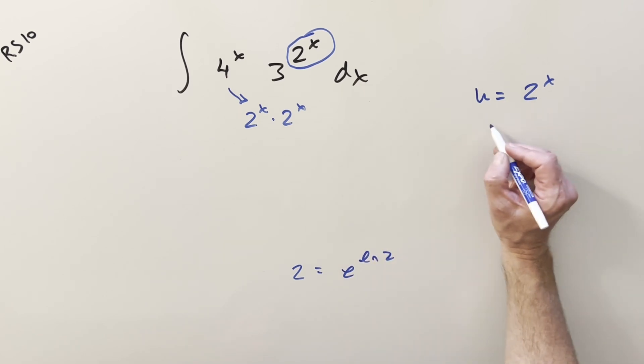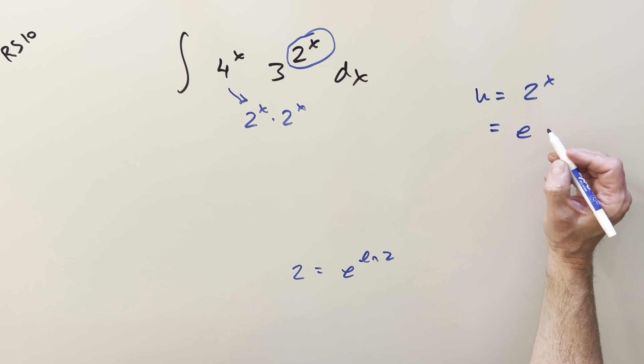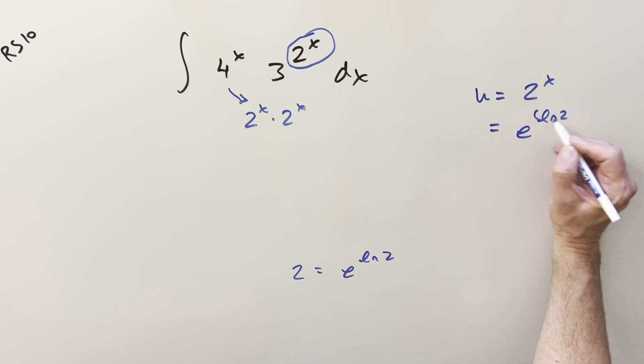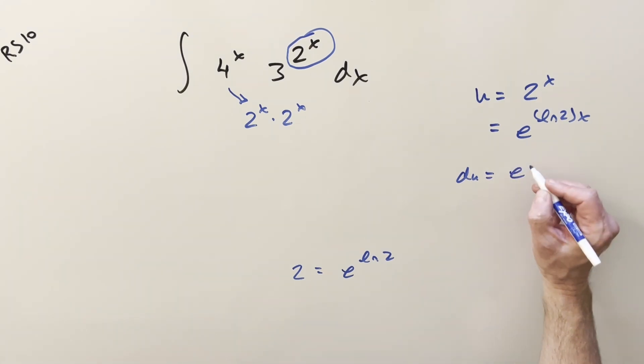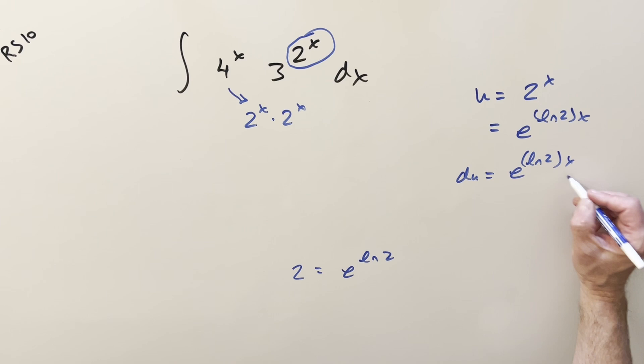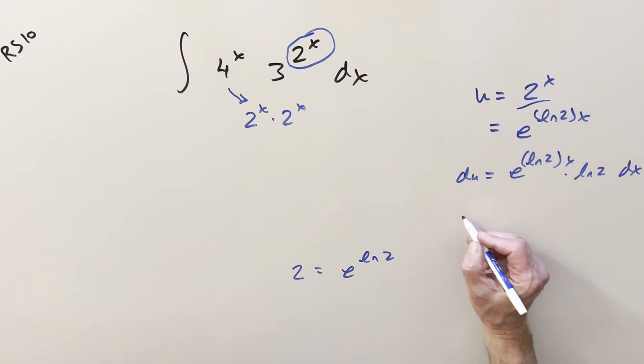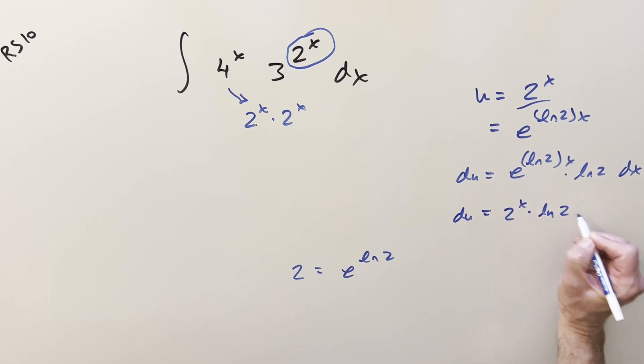So for u, another way I can write this is going to be e ln 2 times x. Then let's get our derivative on this, so we're going to have our du is going to be e ln 2x, then chain rule we're just going to have natural log of 2 pop out. We could also just use a formula on this, so the other way to write du would just be 2 to the x ln 2 dx.